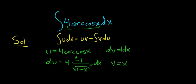So now we're going to use the formula. This is equal to uv, which would be 4x arc cosine x minus the integral of v du. Now there's already a minus here, so it's going to be plus.